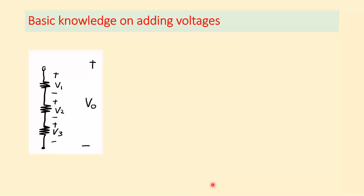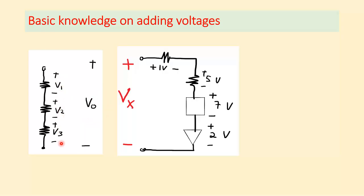More on adding voltages. If components are in series, the resultant voltage adds. So V out equals V1 plus V2 plus V3. Another way of looking at it: if Vx is across several series components with voltages 1V, 5V, 7V, and 2V, then Vx equals 1 plus 5 plus 7 plus 2 volts — you just need to know the values, not what each component is.